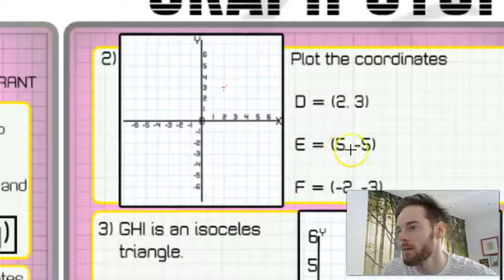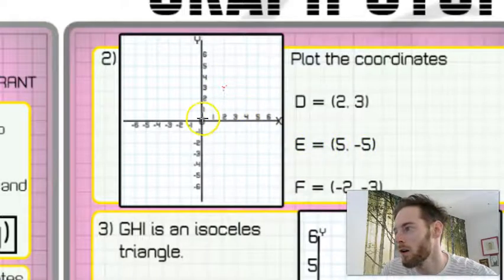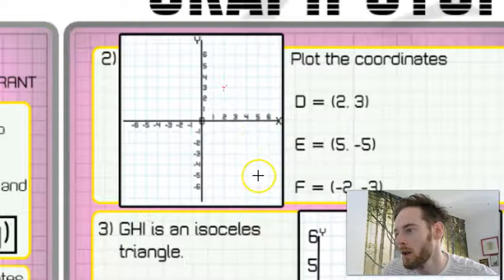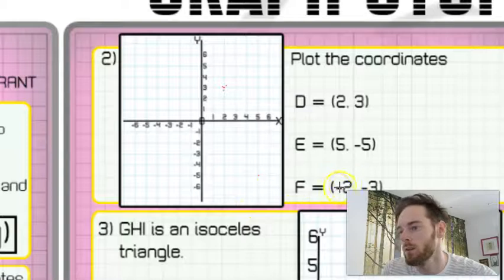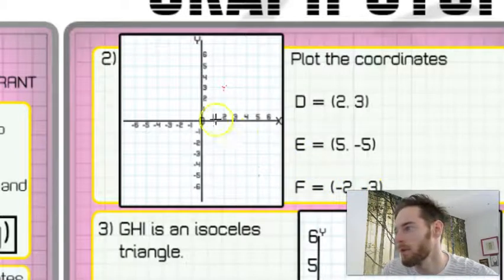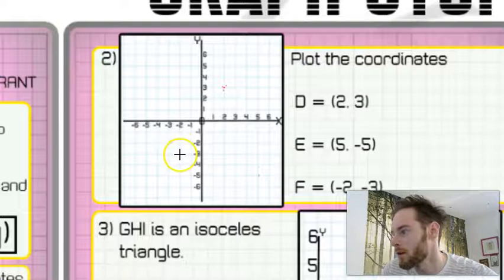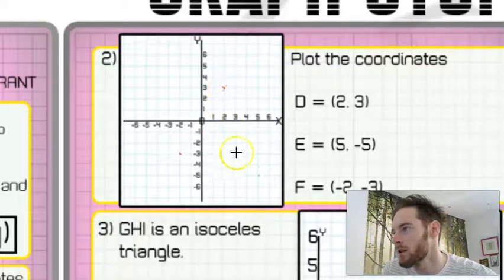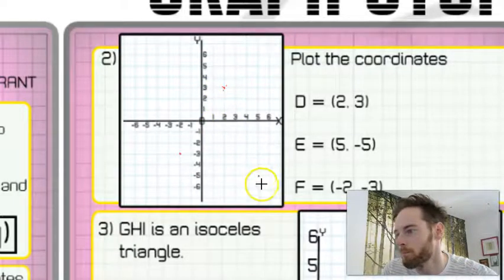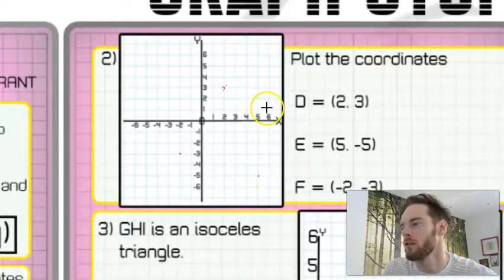And that we can label point d. E is five minus five. So go across to five and go down five and you'll see that that point there is point e. And then point f is minus two minus three. So minus two minus three is there. It's a relatively simple process. There's the spaces that need to be shown with x's.